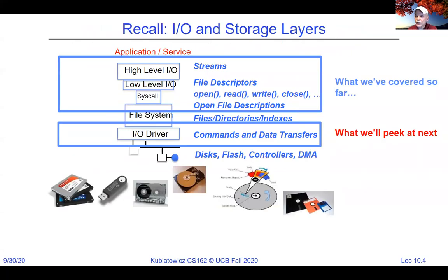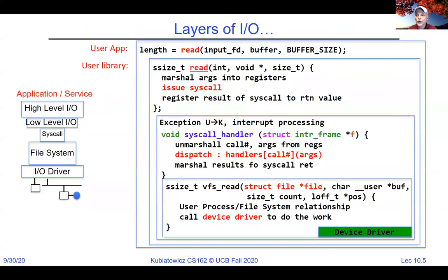I wanted to finish something from last time — showing examples of scheduling threads within the kernel. I also want to talk about the I/O portion of the I/O interface. At the user application level, you might execute a read, which is a raw interface that translates directly to a system call inside the libc library. That system call marshals arguments into registers and calls a syscall, returning results as if it were a function.